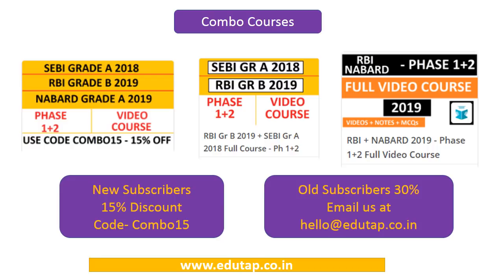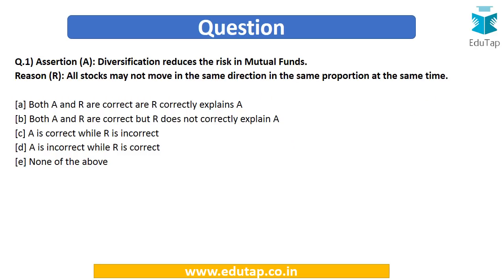The first question is an assertion-reasoning based question. The assertion is: diversification reduces the risk in mutual funds. The reason given is: all stocks may not move in the same direction in the same proportion at the same time. The options are: both A and R are correct and R is the correct explanation for A; both A and R are correct but R is not the correct explanation; A is correct while R is not; or A is incorrect while R is correct.